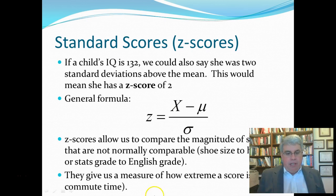This would also allow us to compare grades, like maybe your stats grade to an English grade. If we knew what the mean for the class was, and the standard deviation, we could take your score, calculate a Z for the stats class, and do the same for the English class, and compare the two Z-scores to see what you're doing better in.